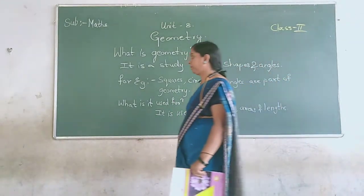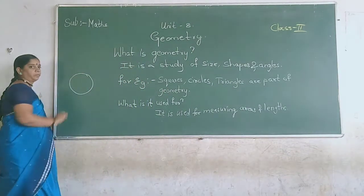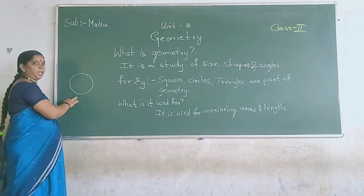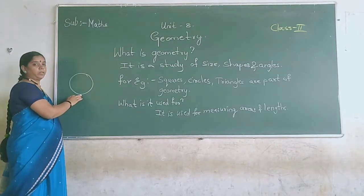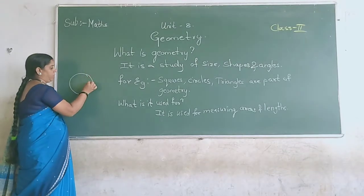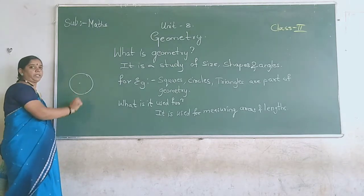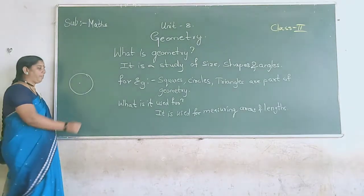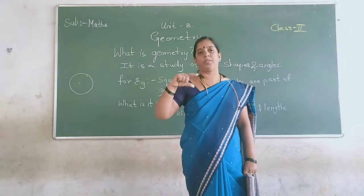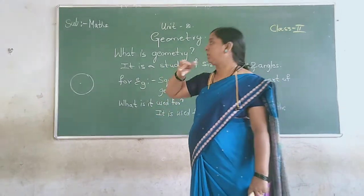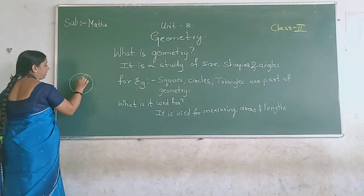So what is geometry? What is this — can you identify? This is the circle. How can we draw the circle? With which instrument can we draw the circle in geometry? You have an instrument called a bridge. You take the bridge and with the help of the bridge, you can draw a circle or make many other shapes.